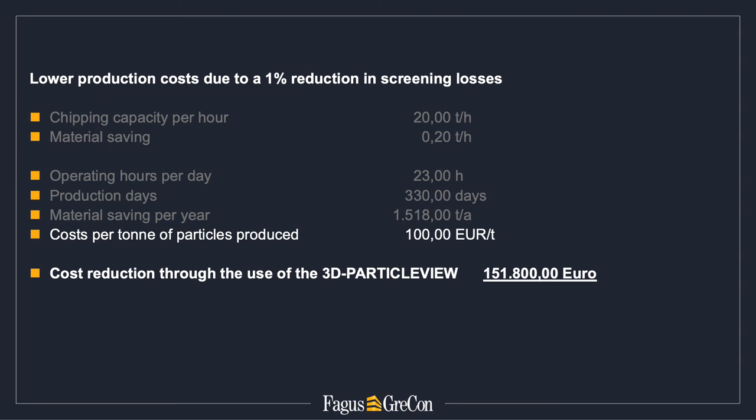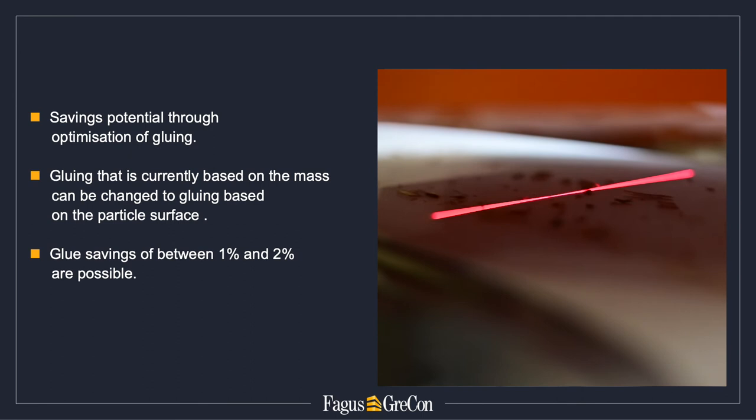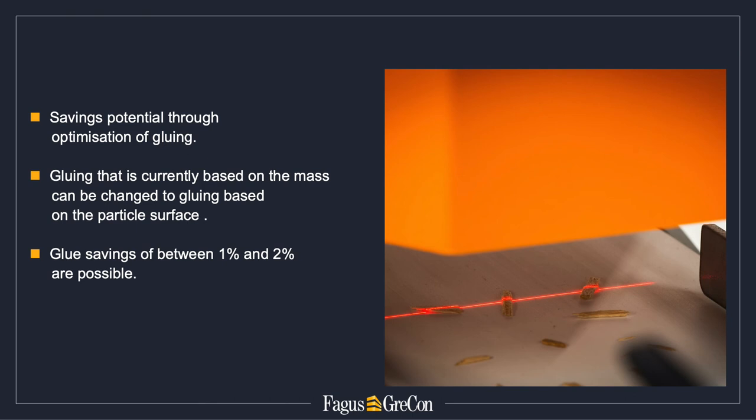Gluing optimization delivers a further savings potential. The continuous analysis of particle geometry enables a change from gluing based on mass to gluing based on the particle surface. Studies show that gluing savings of between one and two percent are possible.